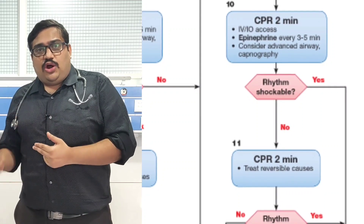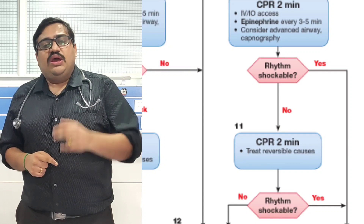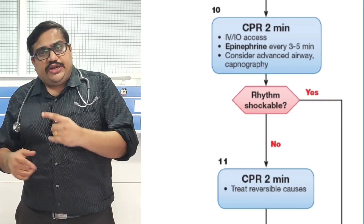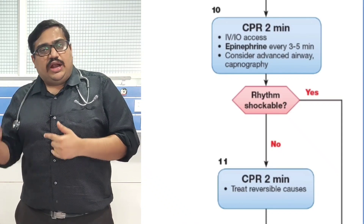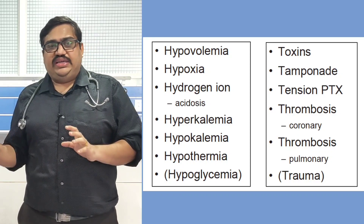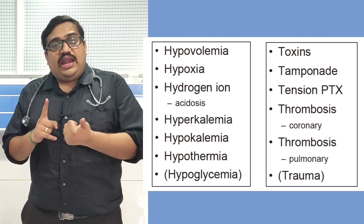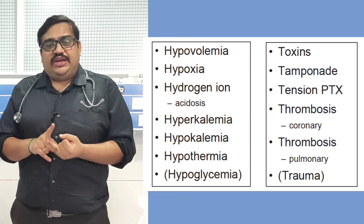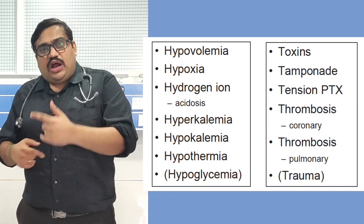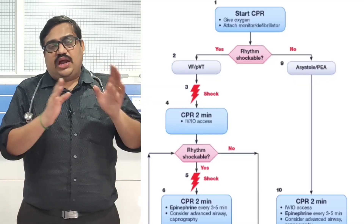Once 2 minutes is over, reassess the rhythm. For a non-shockable rhythm — asystole or PEA — resume CPR and continue giving adrenaline every 3 to 5 minutes. During this time, look for the reversible causes of cardiac arrest: the 5Hs — hypoglycemia, hydrogen ion, hypoxia, hyperkalemia, and hypothermia — and the 5Ts — tension pneumothorax, trauma, tamponade, toxin, and thrombosis (either pulmonary or coronary). Once return of spontaneous circulation is achieved, move to post-cardiac arrest care.